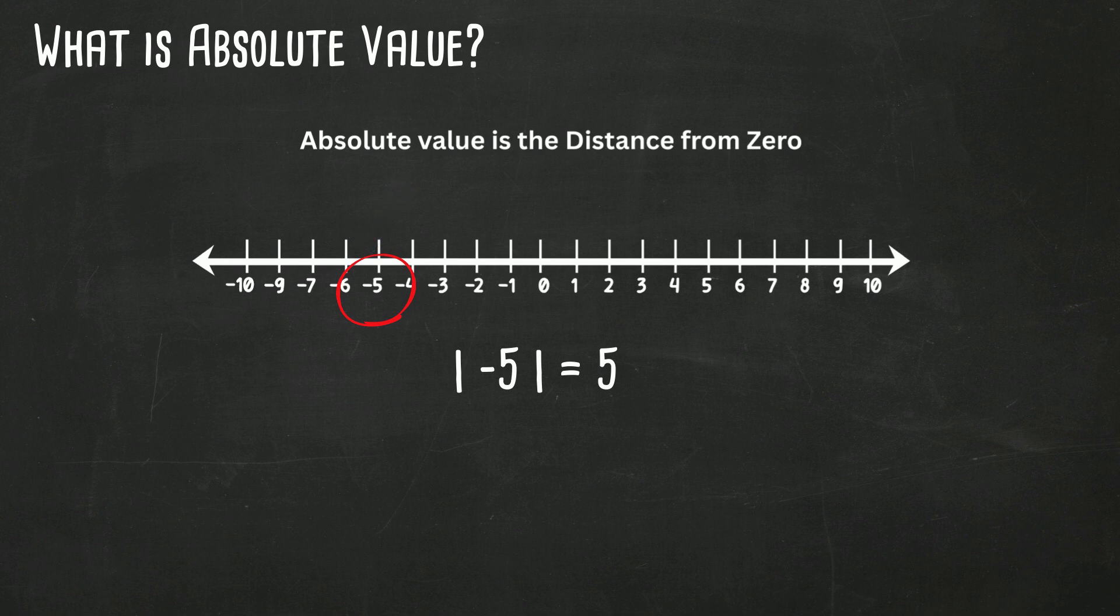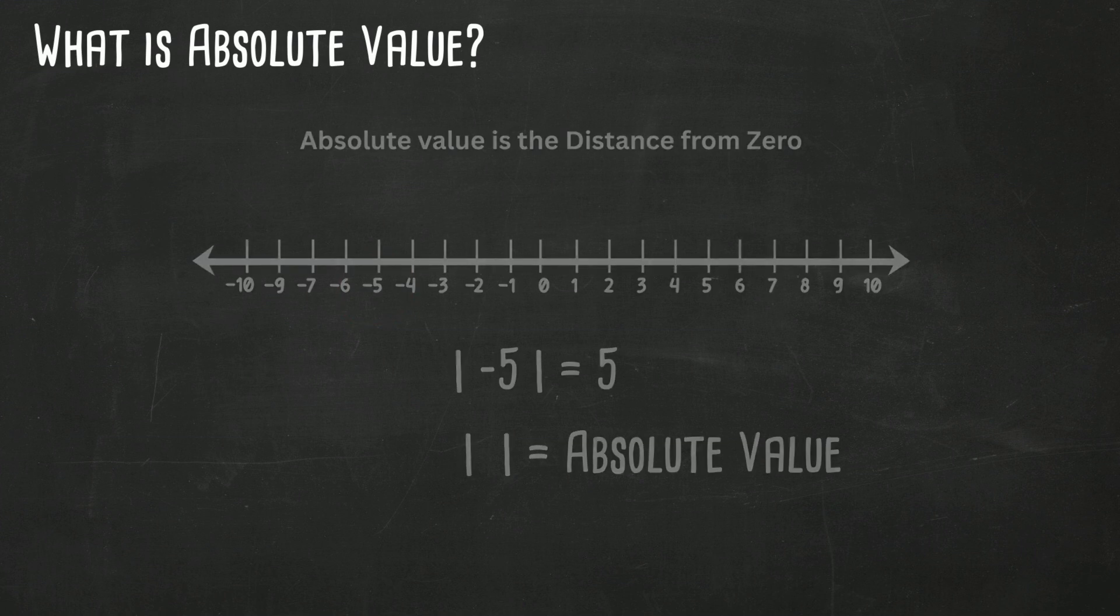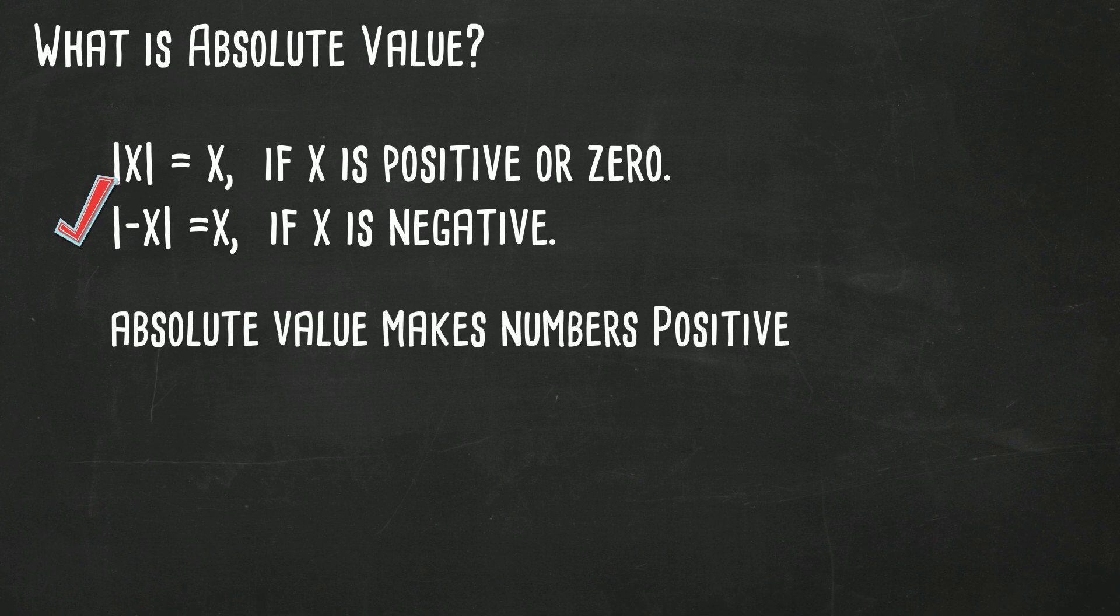The symbol for absolute value is these two vertical lines. So now there's a key rule. If we have the absolute value of x, it's going to be x if x is positive or zero. But then if you have the absolute value of negative x, it's going to be x if x is negative. So in other words, absolute value makes numbers positive.